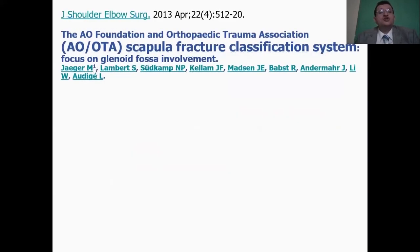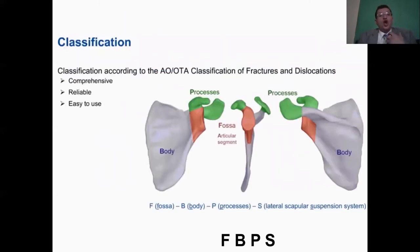So, in 2013, the AO Foundation and the Orthopedic Trauma Association of America formulated a joint commission, which was headed by my dear friends Martin Jaeger and Simon Lambert, to come up with a scapular fracture classification system that's both comprehensive, reliable, and easy to use.